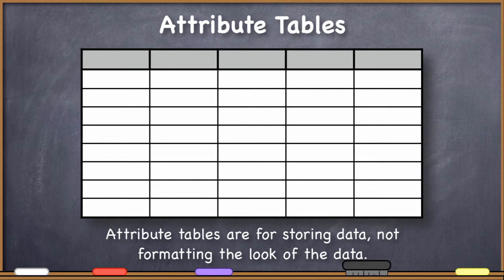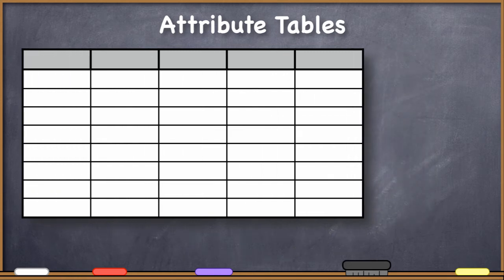You won't be changing the colors of cells or text or changing the formatting or anything like that in an attribute table. It's just about storing data and doing it efficiently so that a computer can manipulate the data.